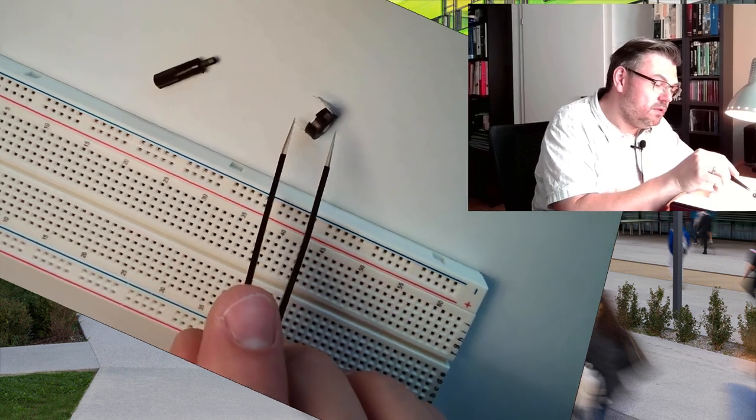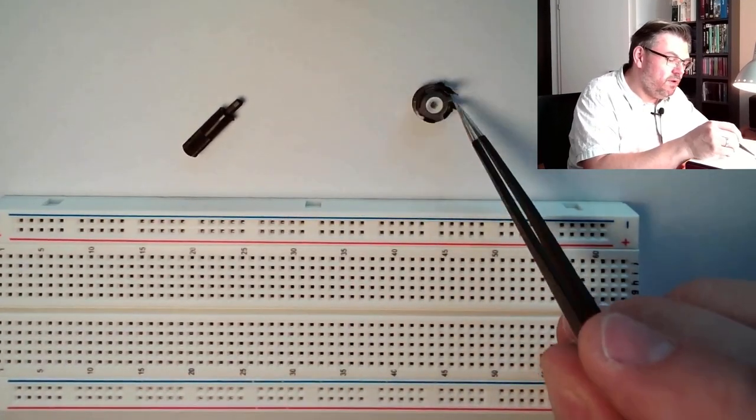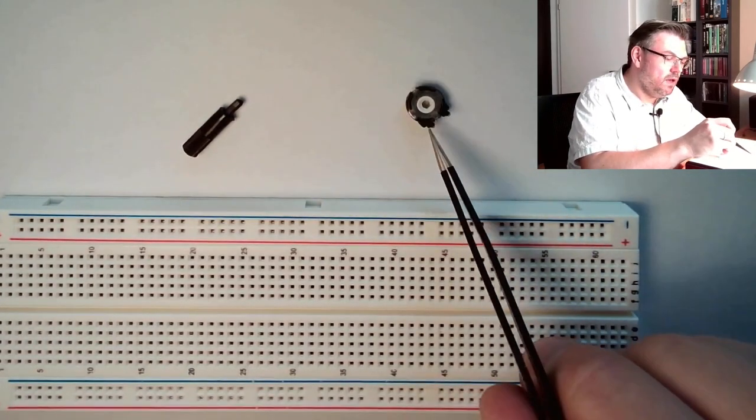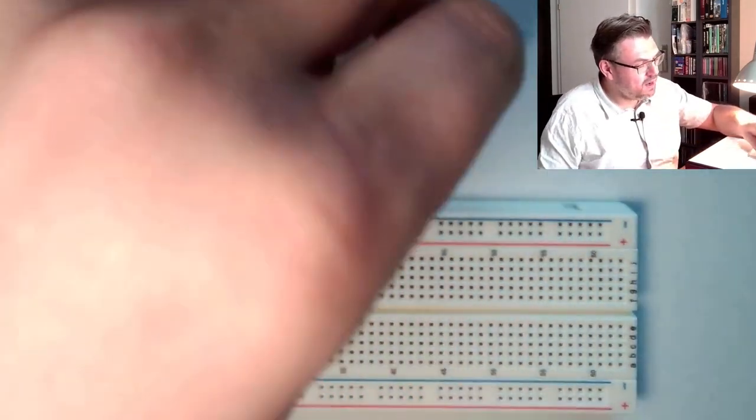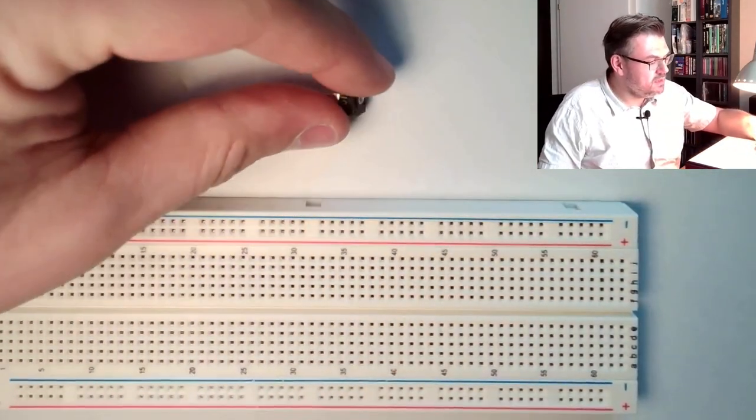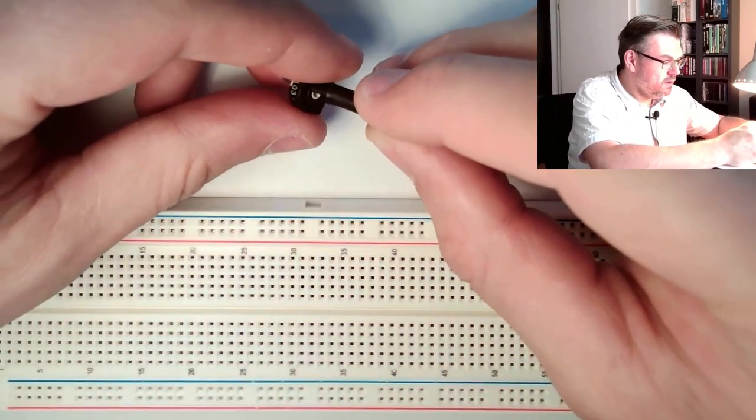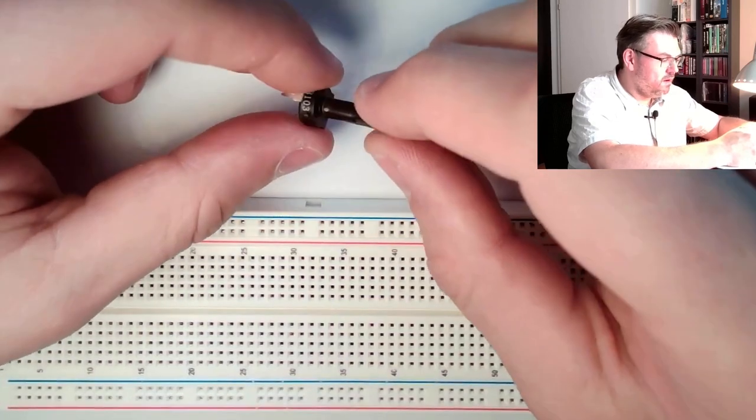And it looks like that - our potentiometer. This is it, it has three connectors, three legs. And the thing which is coming with this potentiometer is this little turning knob you can put in back, then you can turn.